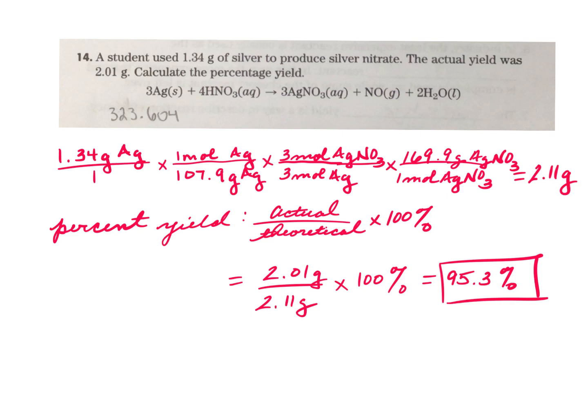Here's number 14. They give you some information about a student using 1.34 grams of silver to produce silver nitrate. They tell you the actual yield was 2.01 grams and they want you to find the percent yield and they've given you the balanced equation.